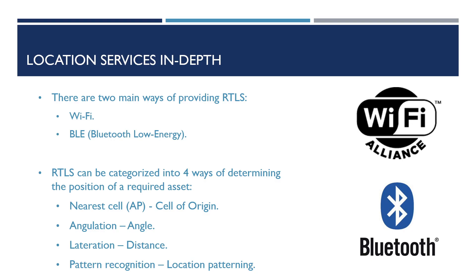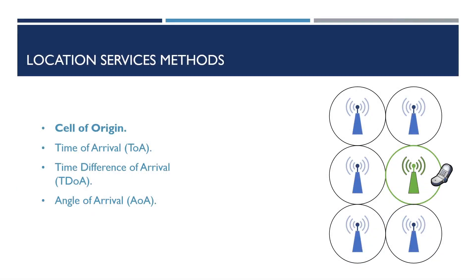There are four categories for tracking assets with real-time location services. These are nearest cell, angulation, lateration and pattern recognition. So let's take a deeper look into these methods.